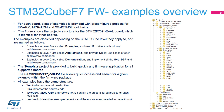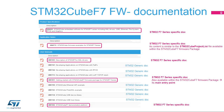The STM32Cube project list file allows quick access and search for a given example within the firmware package. All examples have the same structure: the /INC folder contains all header files, the /SRC folder contains the source code, and the /EWARM, /MDK-ARM, and /SW4STM32 folders contain the pre-configured project for each toolchain. A README text file describes the example behavior and the environment needed to make it work. Rich documentation is associated with the STM32CubeF7 firmware package; some documents are generic to all STM32 series and others are specific to the STM32F7 series.